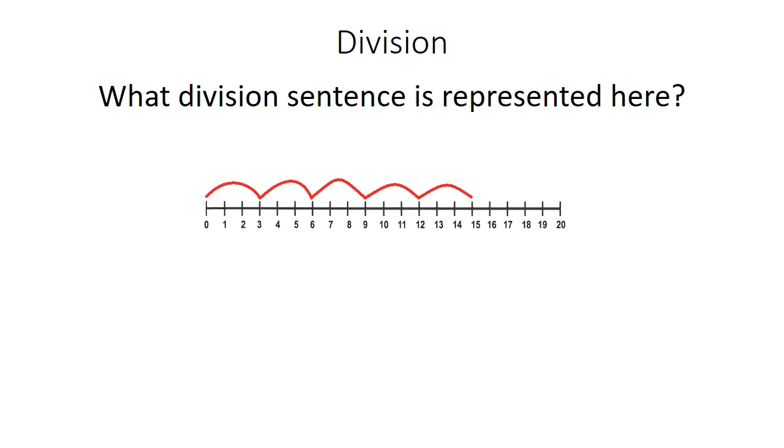Examine this number line and think about what division sentence is represented here. We see 5 jumps of 3 spaces each to get to 15. 15 is made up of 5 jumps of 3, or 5 groups of 3. As numbers, we could say that 15 divided by 5 equals 3.